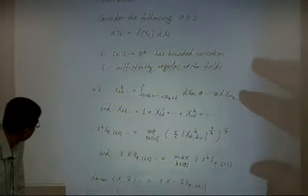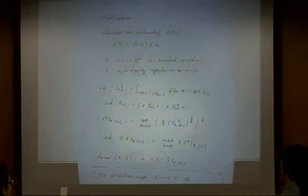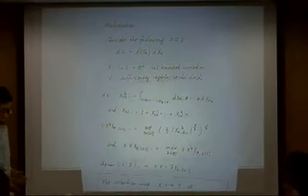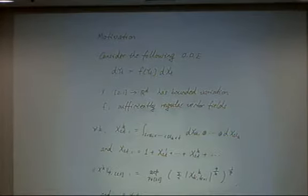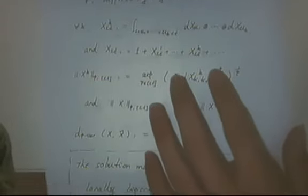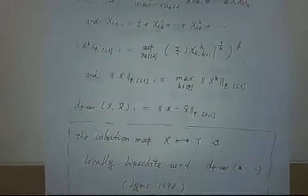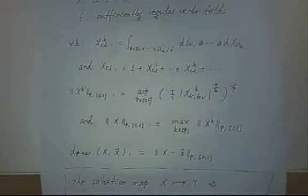We look at ordinary differential equations which is very common. So dY_t equals F(Y_t) dX_t. We want to look at the ODE where X_t, the driving noise, is very rough. But to get some ideas, let's first assume X has bounded variation and the vector field is sufficiently regular. So there will be no question about the existence and uniqueness of the solutions. Given a path X_t, one has a solution Y_t, and we ask what is the most essential property of the path X that produces the solution Y given the vector field.